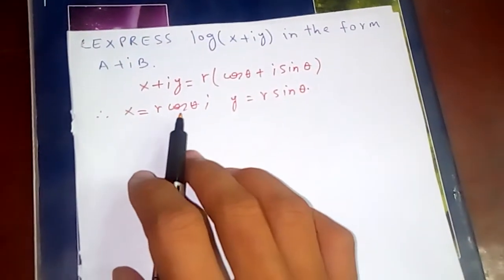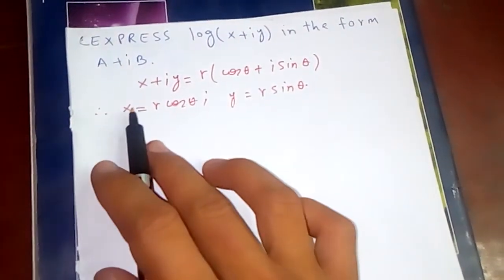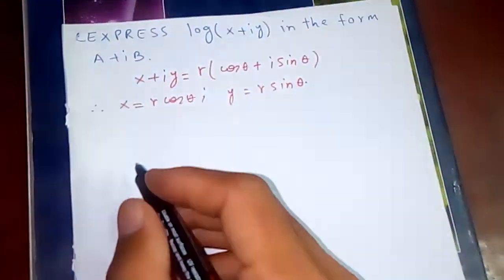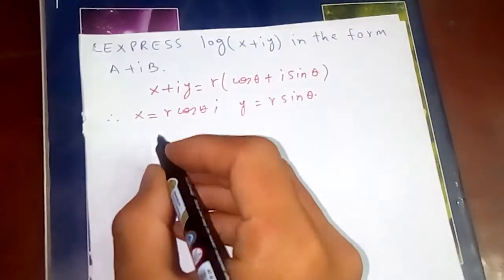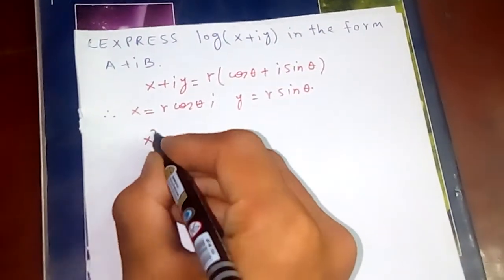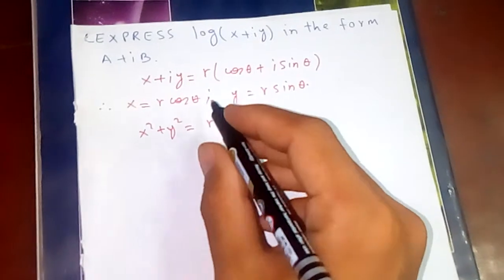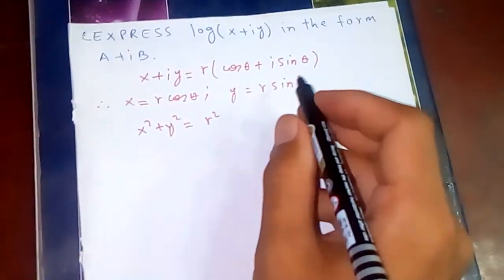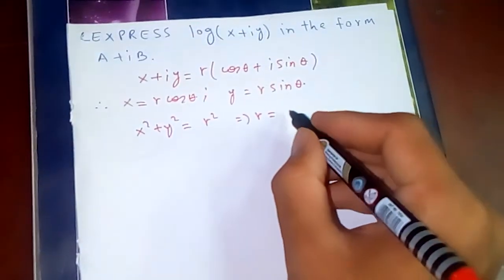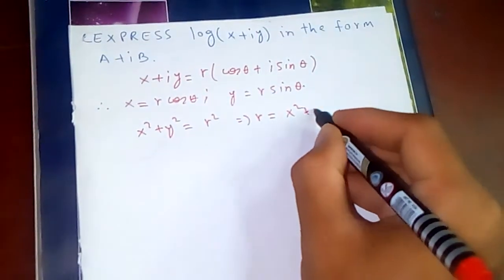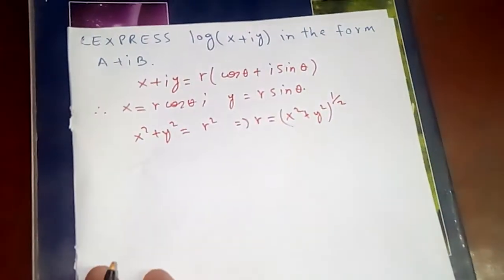We want to find r. Squaring and adding both sides: x² + y² = r²cos²θ + r²sin²θ = r²(cos²θ + sin²θ), which equals r² times one. So r is nothing but the square root of x² + y², or (x² + y²) to the power of one half.